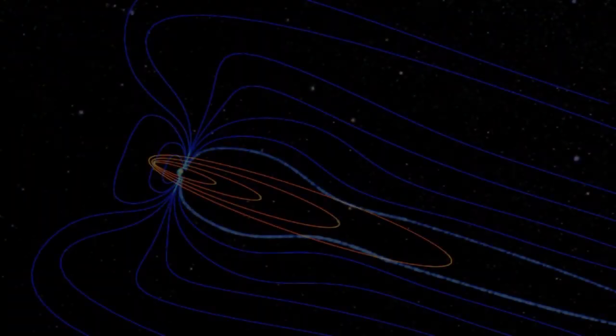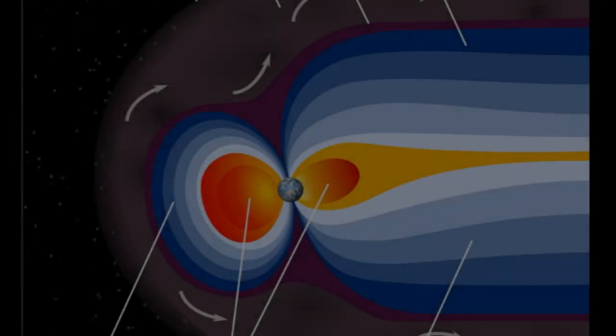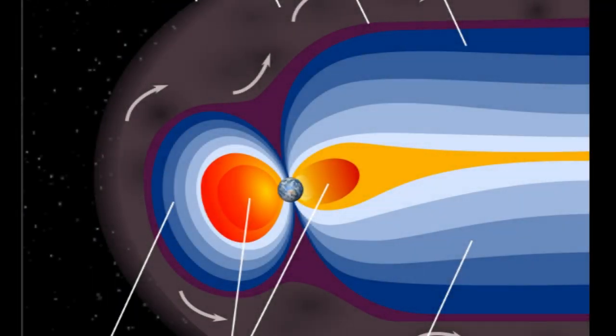Earth's magnetic field extends many miles into space. On the night side of the planet, it extends 3,900,000 miles or greater, this long extension being called the magnetotail.